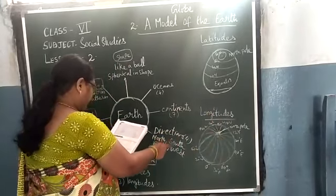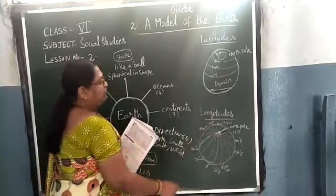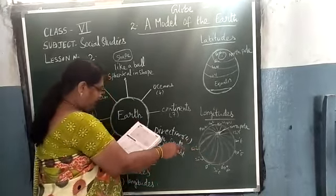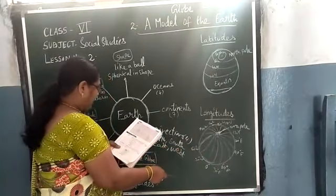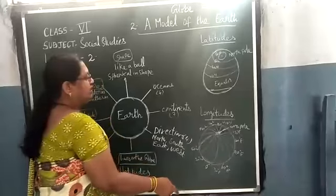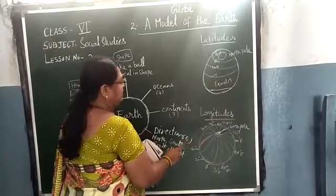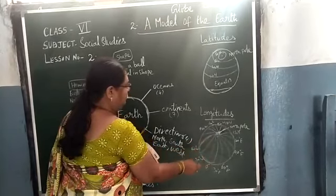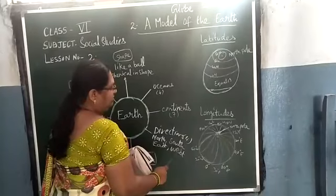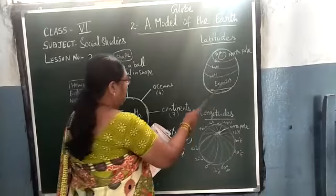Longitude means imaginary lines drawn on the globe running from one pole to the other. These lines are all of the same length. The degrees go: 150, 120, 90 degrees east. The equator will be in the middle.